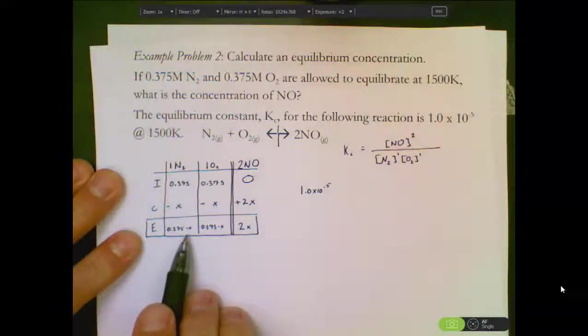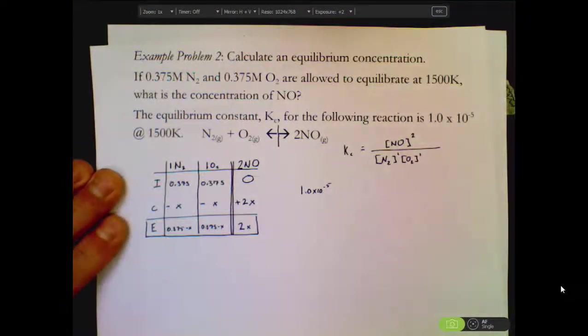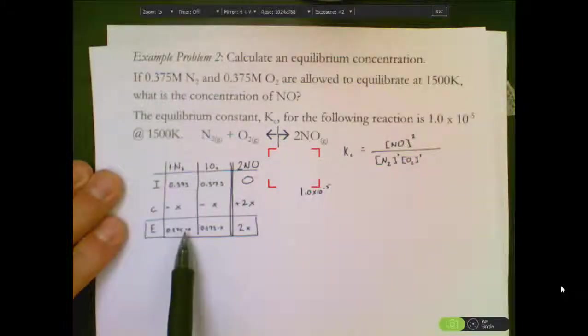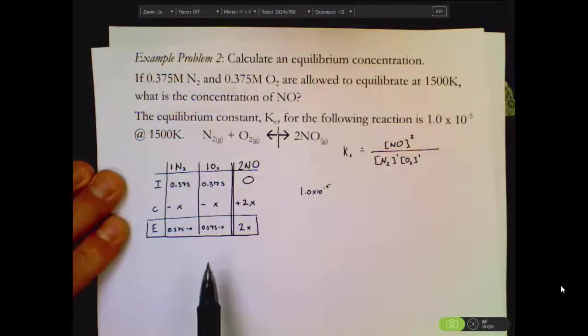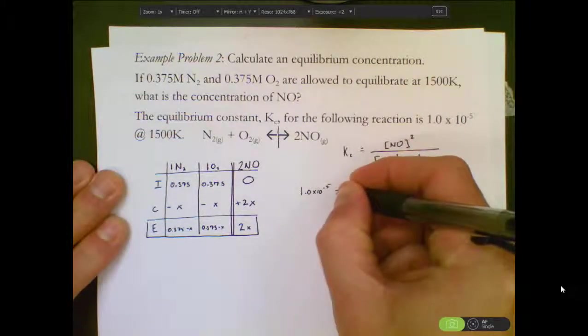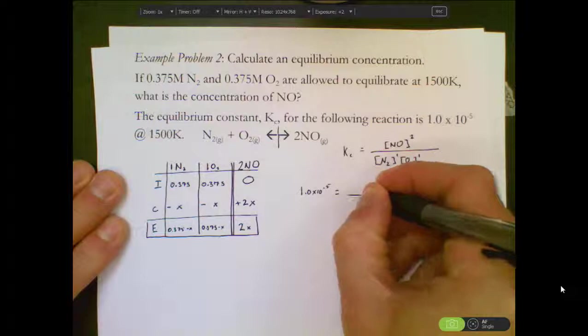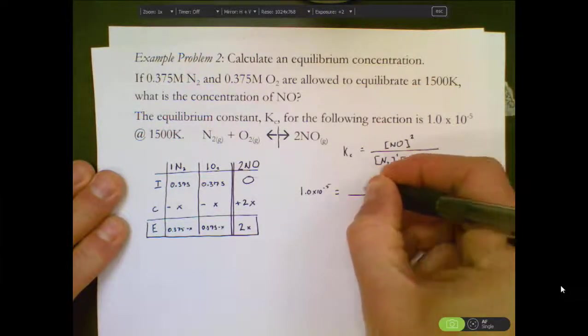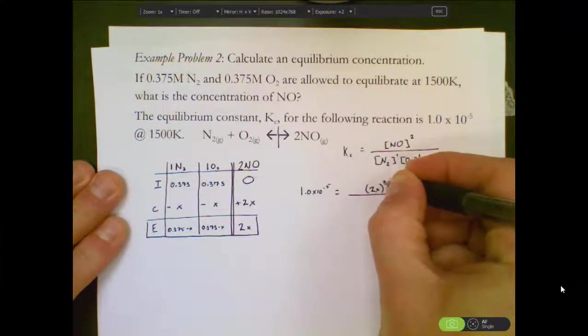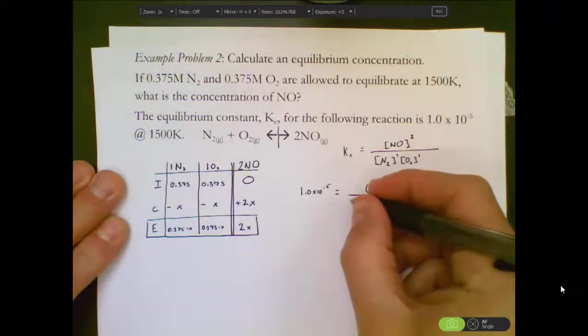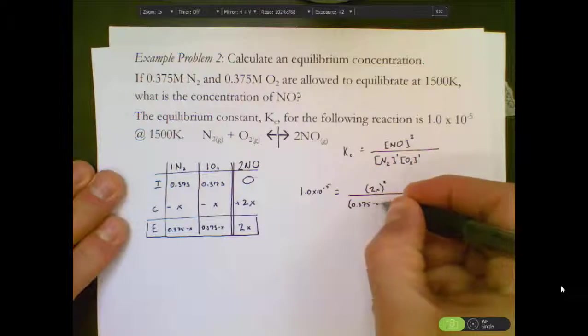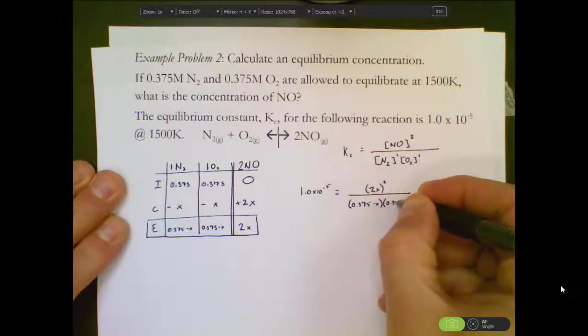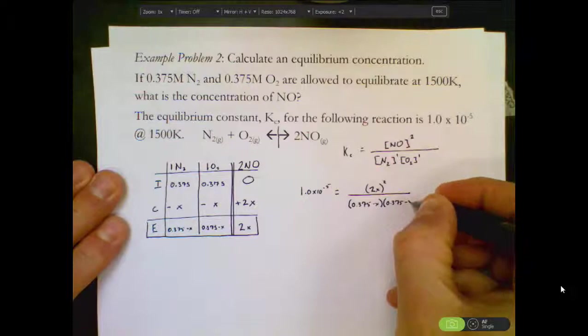We could actually take this minus X and actually drop the minus because the amount that we're going to subtract away is very, very small. In this case, we can also do another little math trick once we set this thing up. So I can take my 2X, I need that whole thing squared, so don't forget to put that in parentheses and square the whole thing. I have 0.375 minus X and 0.375 minus X.